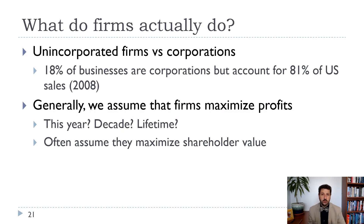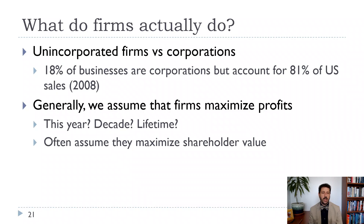The other thing to think about is shareholder value. A lot of business and economics thinkers over the last 40 years have argued that firms should maximize shareholder value. Shareholders are the people who own the firms — for a large public corporation, those are the people who own the stock; but shareholders could also be a private equity firm, a family, or whoever actually owns the firm. How do we maximize shareholder value? Do we maximize short-term profits, just the stock price, dividends versus stock buybacks? All of those things go into the decision about maximizing shareholder value.